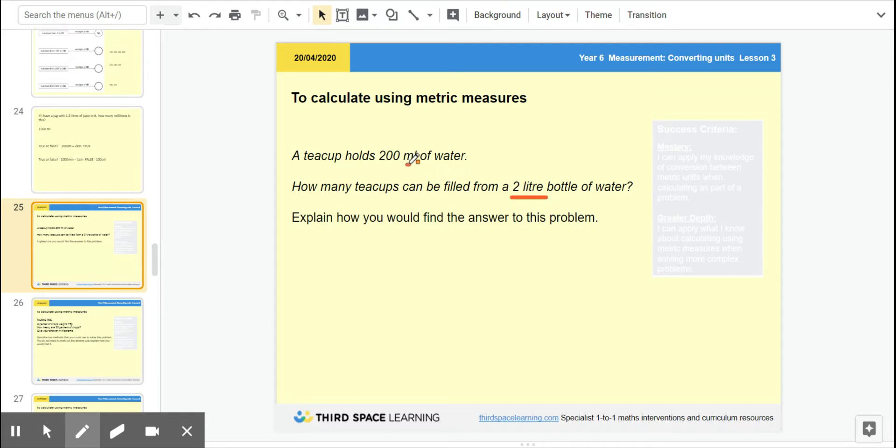So we know that in 2 liters, that is an equivalent. We need to get our units of measurement the same, don't we? 2 liters is equivalent to 2000 milliliters. Okay, so then we need to find out how many teacups can fill 2000 milliliters, so we need to do 2000 divided by what? Divided by 200.